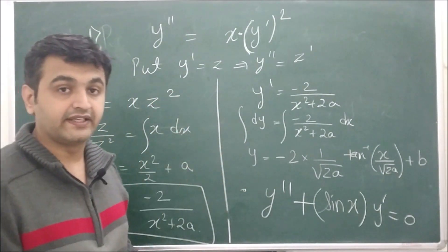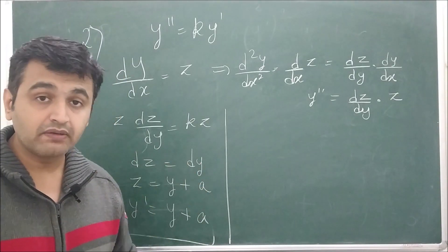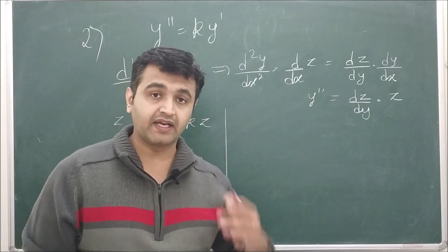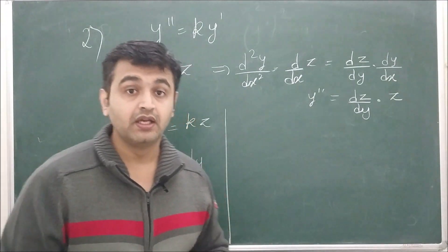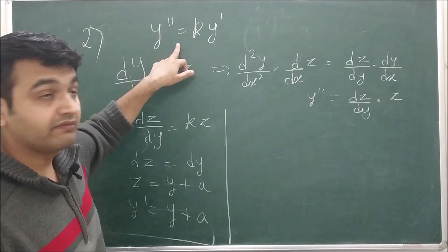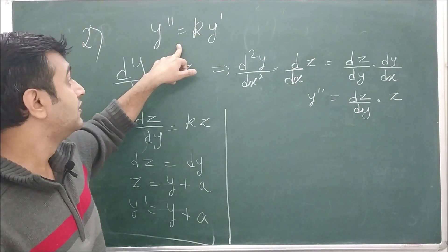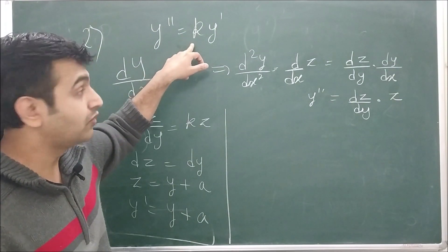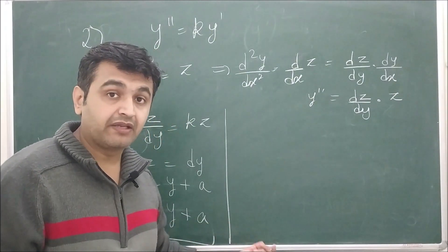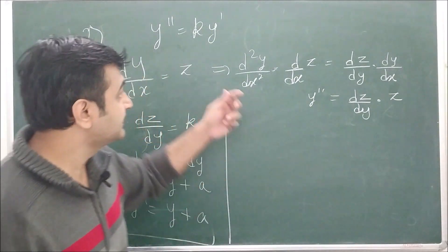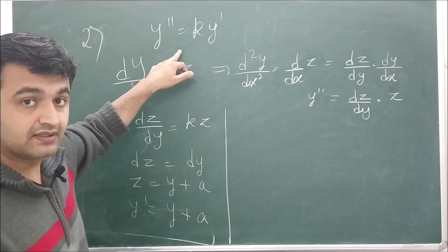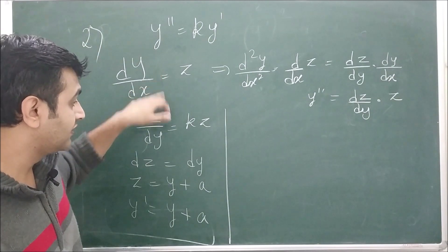Now the second scenario: suppose you have a differential equation that does not involve x explicitly — only y, y prime, and y double prime. Let's take an example. Since y is also not mentioned explicitly here, you can also use the first method. As a homework, try solving y prime plus y double prime plus sin(x) times y prime equal to 0 by the previous method as well.